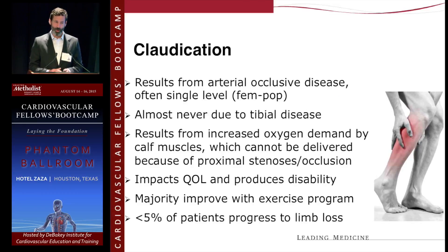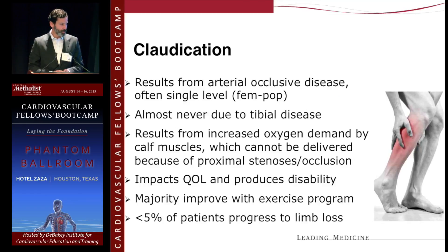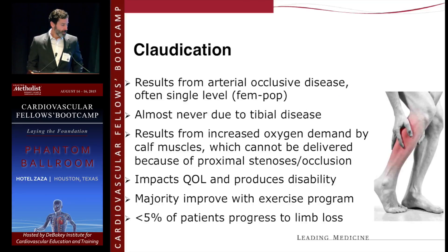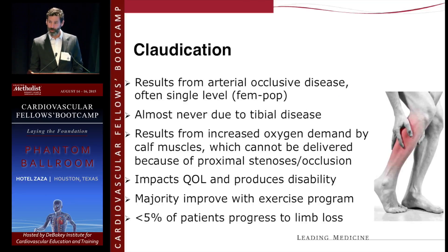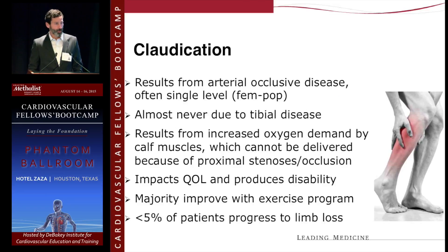Claudication is almost never due to tibial disease. There are certain situations in which patients can have symptoms from trifurcation disease, but really this is mostly femoral popliteal disease or aortoiliac disease. It results from increased oxygen demand by the calf muscles when exercising that cannot be met because of the disease within the arterial bed. It's important to note that although this impacts quality of life and produces disability, many patients will improve with an exercise program alone — so that's the appropriate first therapy for all patients with claudication.